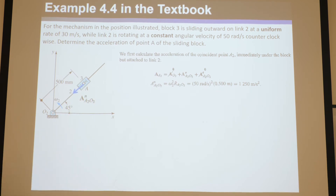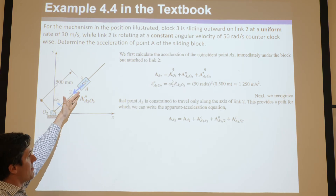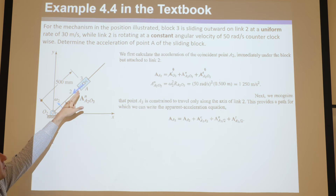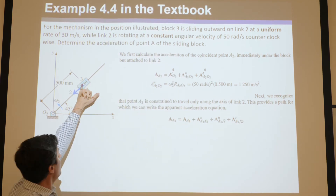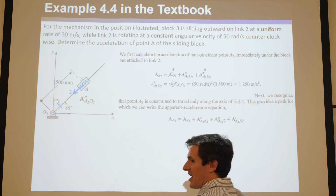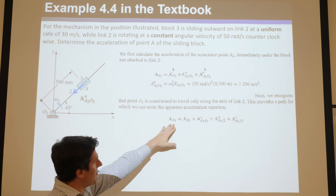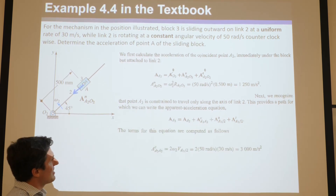We just did the acceleration difference equation to march from O two to point A two. But now we want to find what they actually ask for: the acceleration of A three. Since we're moving from two different bodies — two points on different bodies that are coincident — we need to use the apparent acceleration equation. That equation has the acceleration of A two, plus the Coriolis term, plus the apparent acceleration of A3 with respect to two, which has normal and tangential components. So to get from O two to A two we used the acceleration difference equation; now to get from A two to A three we'll use the apparent acceleration equation.